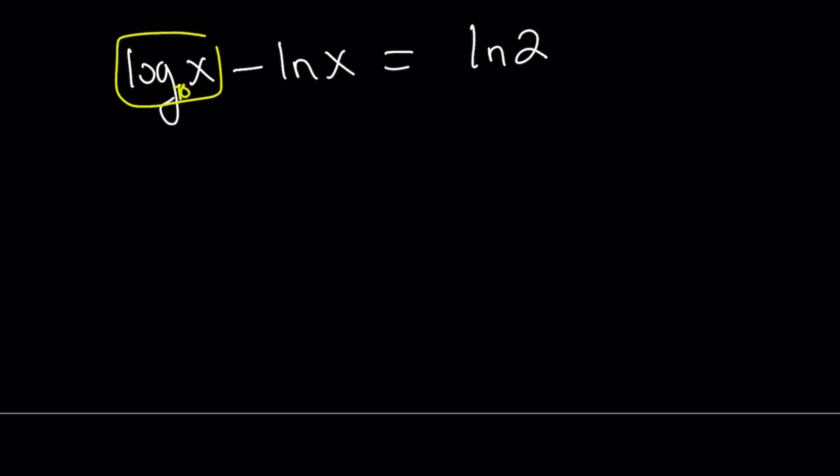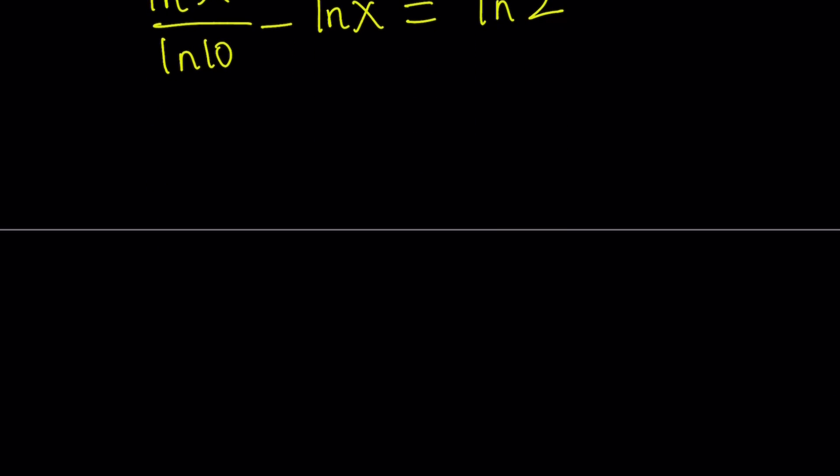Remember, this is base 10. So I can write log x as ln x over ln 10. This is actually one of the easiest conversions because they're special bases. Now, they have the same base, but I do have an extra constant at the bottom. Don't worry about it. Doesn't matter. Because we can take it out.